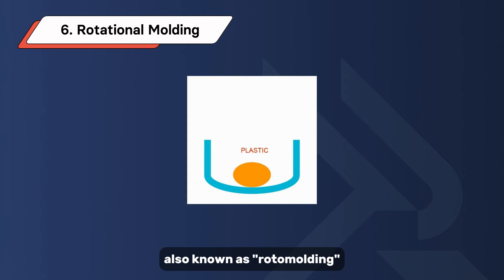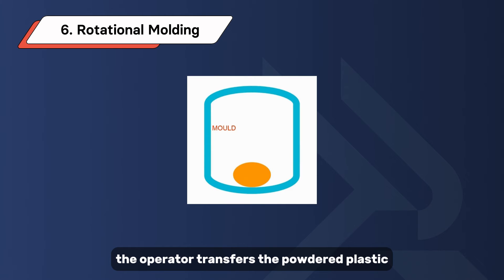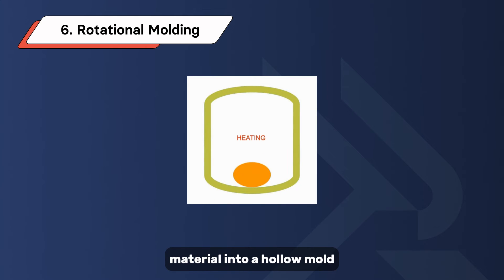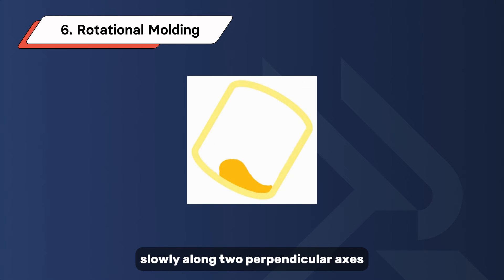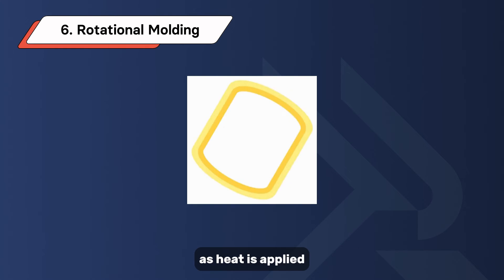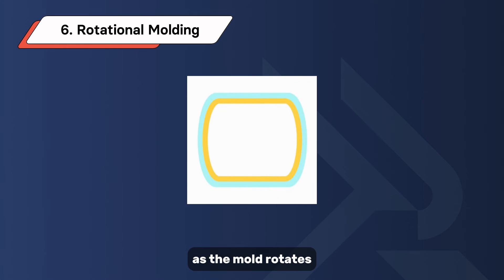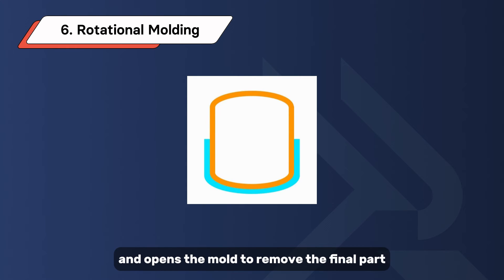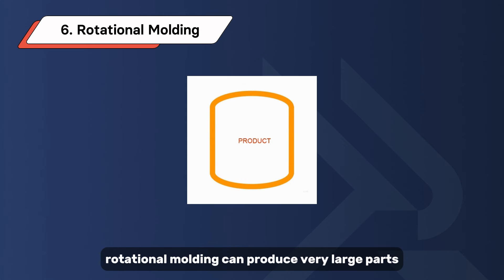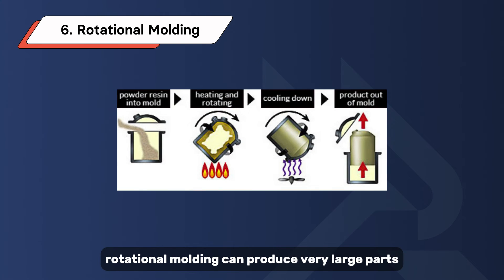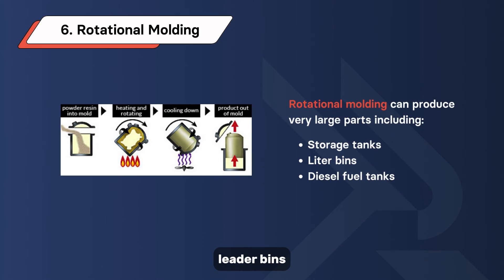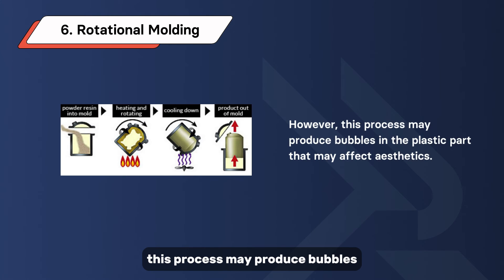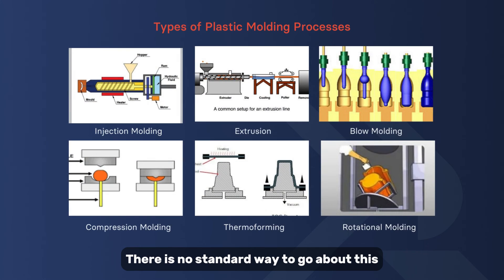A key advantage of thermoforming is speed — it can produce many parts per cycle. However, this process is limited to thin-walled parts. Thermoforming is suitable for packaging blisters, food and medical trays, and automotive dashboard panels. Rotational molding, also known as roto molding, involves transferring powdered plastic into a hollow mold, which is then rotated slowly along two perpendicular axes while heat is applied. As the mold rotates, the plastic coats the walls gradually. After sufficient cooling, the operator stops rotation and removes the final part. Rotational molding can produce very large parts such as storage tanks, bins, and diesel fuel tanks; however, the process may produce bubbles in the plastic that affect aesthetics.